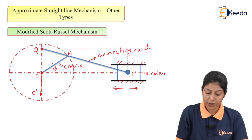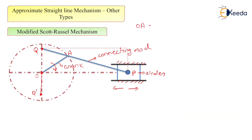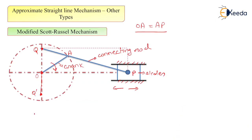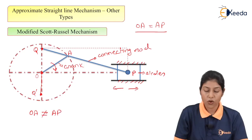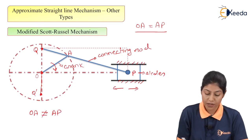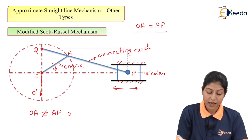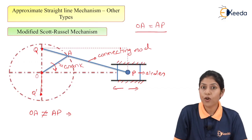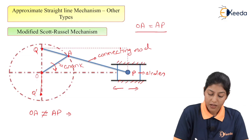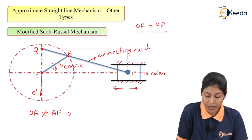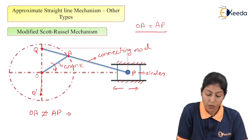In the Scott-Russell mechanism we consider OA equals AP. Now in the modified Scott-Russell mechanism, OA does not equal AP. With this condition, point Q will not form exact straight line motion. Here point A will move along a curve, and this point A will form an elliptical trammel — it will trace one ellipse.